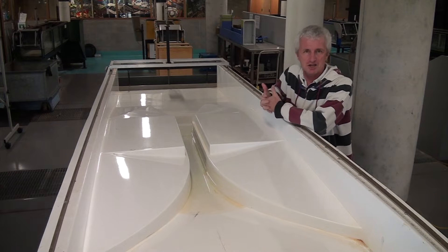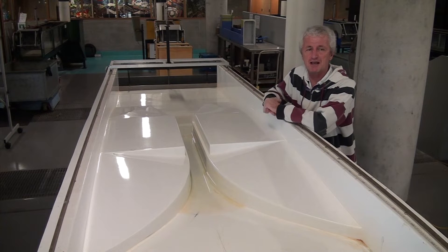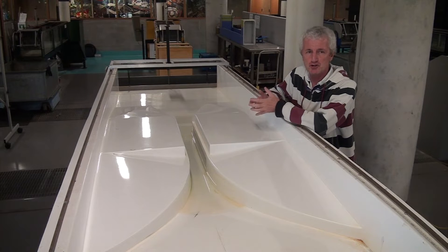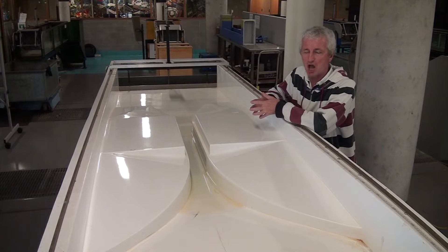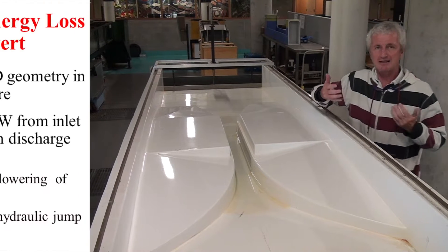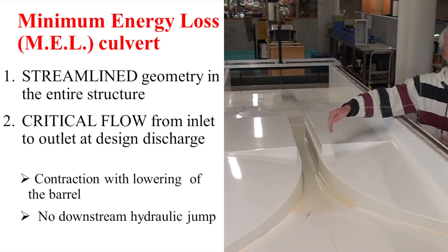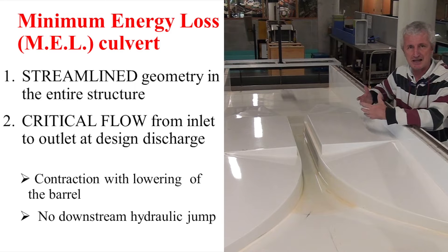While the standard box culvert is cheap and very easy to build, it is also fairly inefficient in terms of hydraulic engineering. In Queensland in the late 1950s, a new type of culvert called the minimum energy loss culvert, or MEL culvert, was designed. It has been applied in a number of applications in Australia and overseas. The key feature of the MEL culvert is to bring the flow smoothly from the inlet to the barrel in a manner which will limit the energy losses.